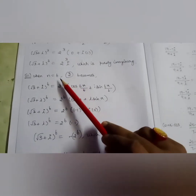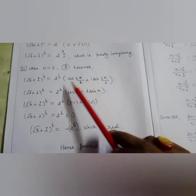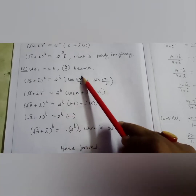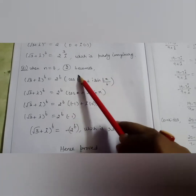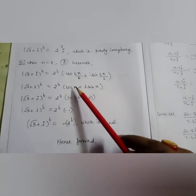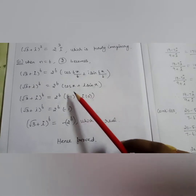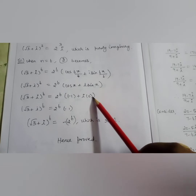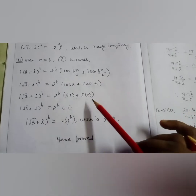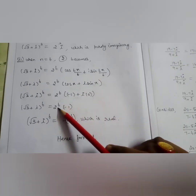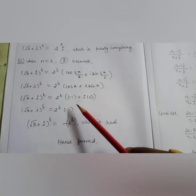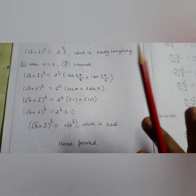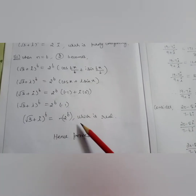Similarly, when n = 6: (√3 + i)^6 = 2⁶(cos(6π/6) + i sin(6π/6)) = 64(cos π + i sin π). Since cos π = −1 and sin π = 0, this becomes 64 × (−1) = −64, which is purely real. Hence proved. This is also a very important sum.